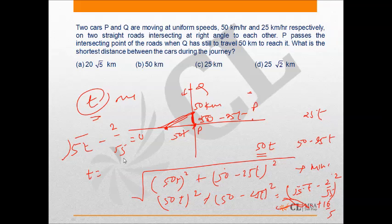Therefore the required distance will be root of 50 into 2 by 5 whole square plus 50 minus 25 into 2 by 5 whole square, and root of this whole quantity.